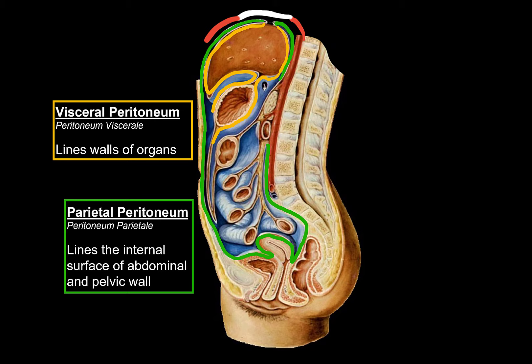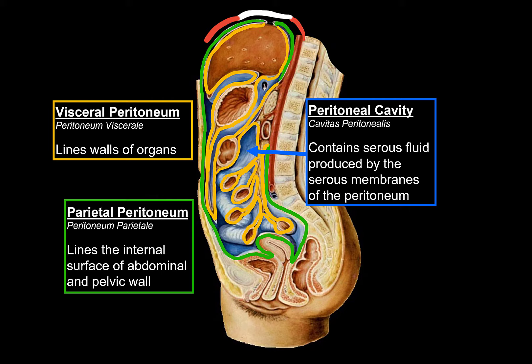The second part is called the visceral peritoneum, which lines the walls of the organs, forming a wet and serous coat, shown here in yellow. Between these two, we have a cavity called the peritoneal cavity, or cavitas peritonealis in Latin, which contains a serous fluid produced by the serous membrane. Both the visceral and parietal peritoneum produce this fluid filling the cavity between them.